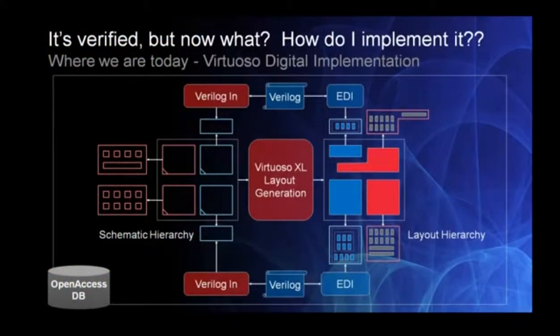You can notice in this diagram that if you have Verilog — even a small amount of digital — you still have to go through the Encounter path, and that's not comfortable for some of our analog engineers who do small amounts of digital. You've got to set up a digital physical hierarchy, and those things are kind of cumbersome. So we're trying to address that.